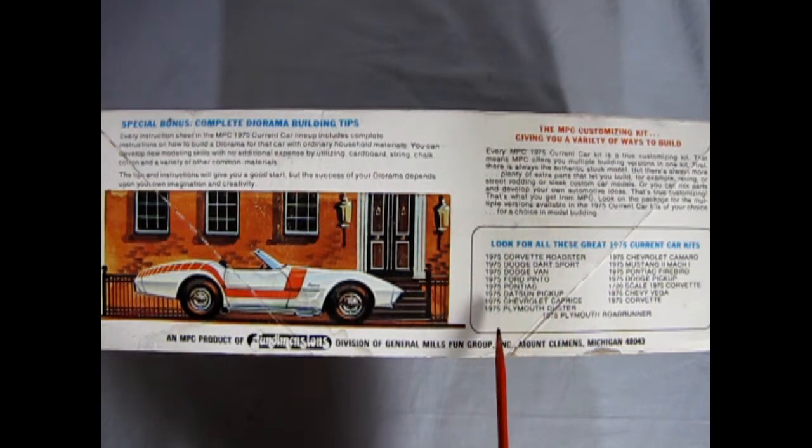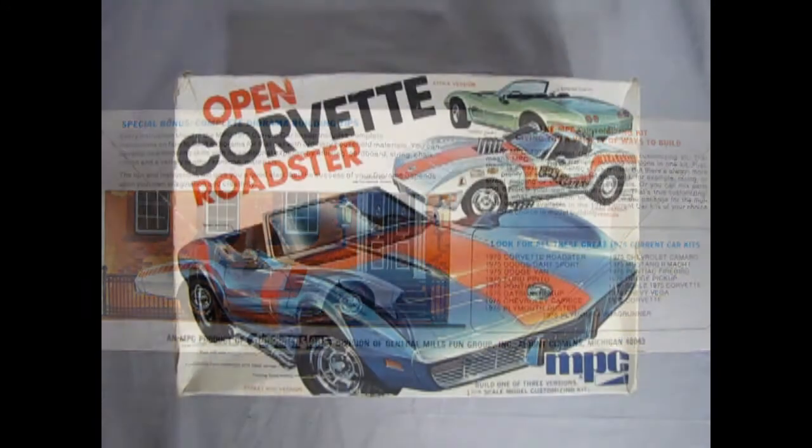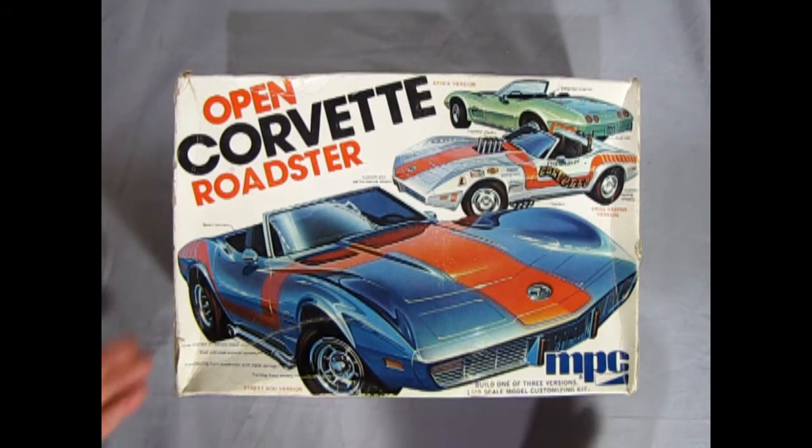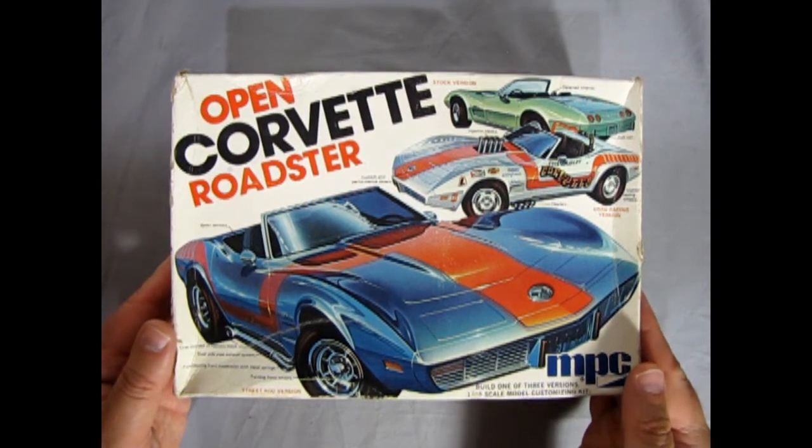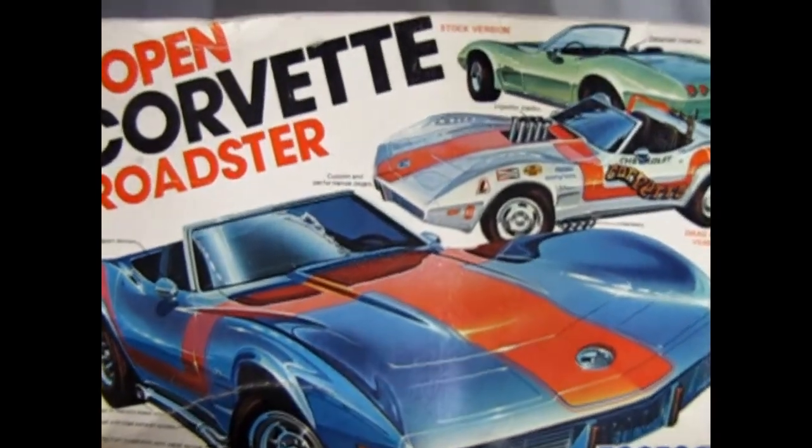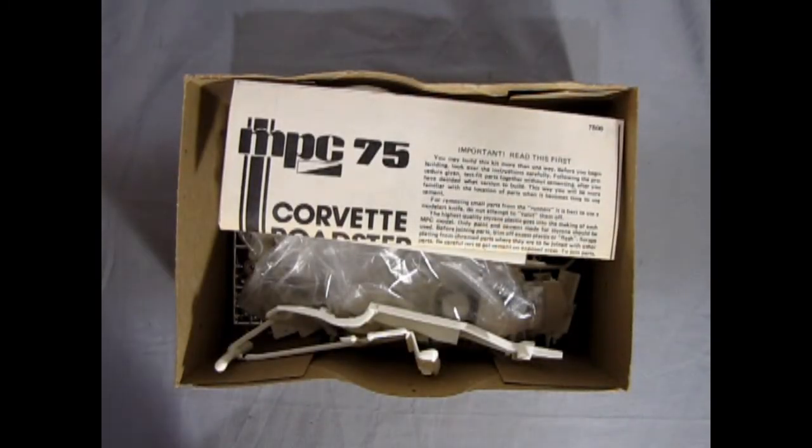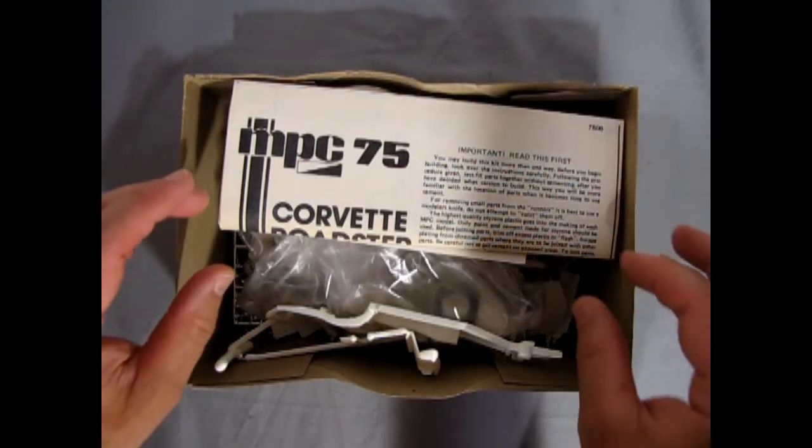Now this kit was an annual back in the day so you can see things like the 75 Corvette Roadster, the Ford Pinto, the Plymouth Duster, the Plymouth Roadrunner, and all kinds of other great things. However, there is one thing that I did notice. They list the 454 cubic inch engine on the side of the box and sadly the 1975 Corvette never actually had that motor, for it was dropped in 1974.